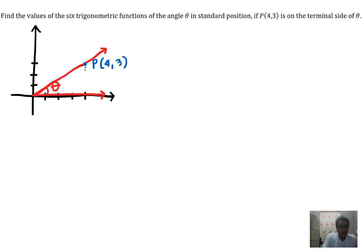This is the point P with coordinates (4, 3). Just like what we discussed, we can actually create a triangle. So this side is 4, this side is 3, and this is R.